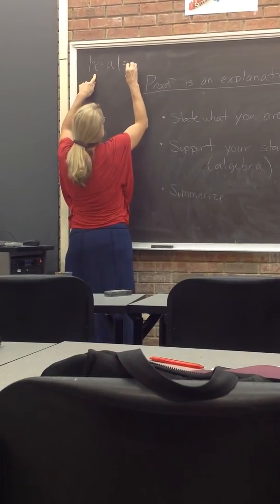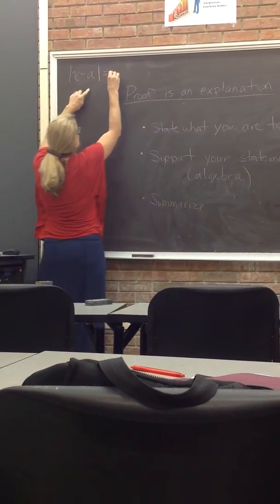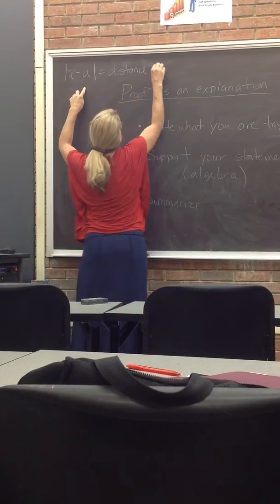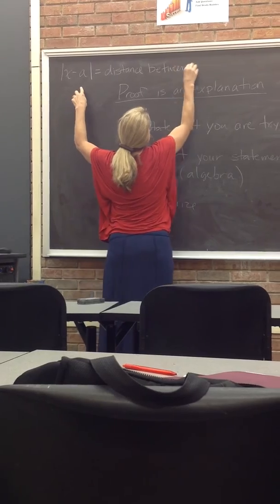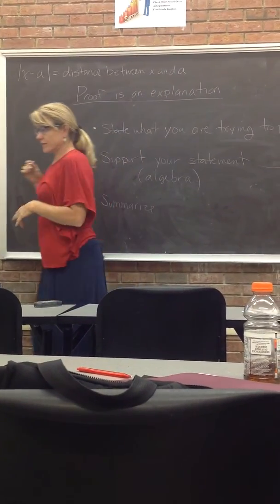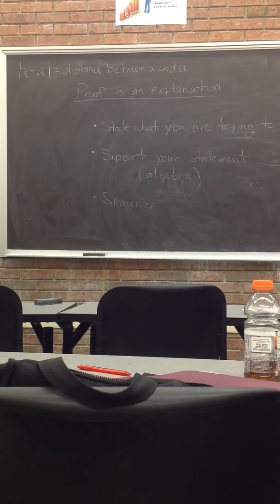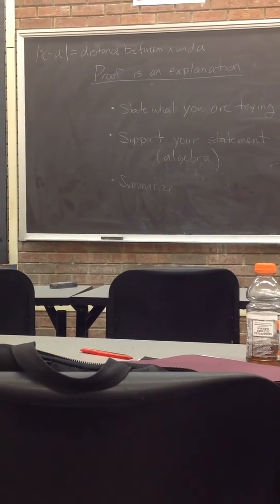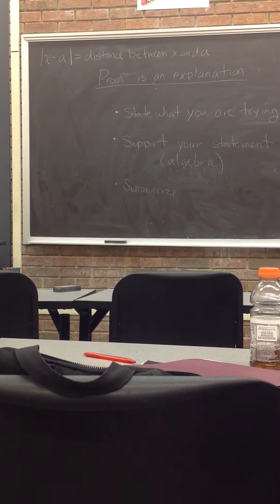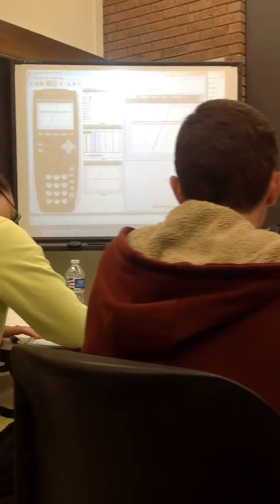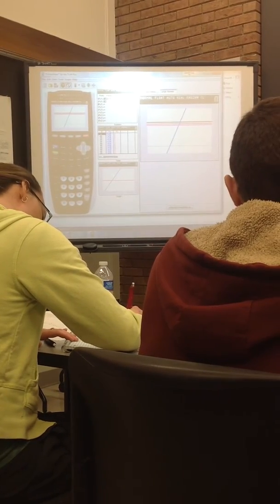This is the absolute value of x minus a, but it means the distance between x and a. So I over there have 5 times the distance between x and 2. And why that's helpful for what we are trying to do is that here's 2.